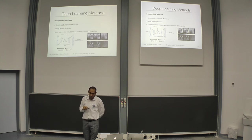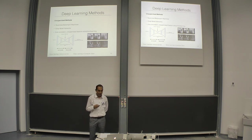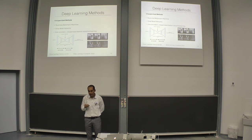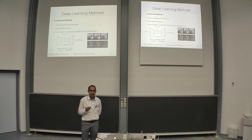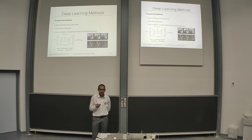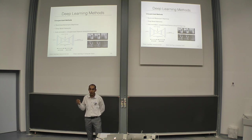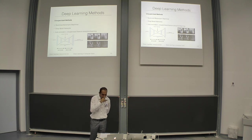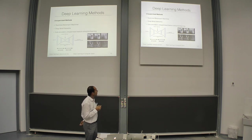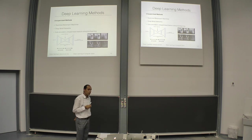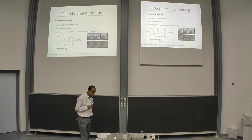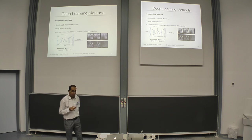Now I'll briefly mention deep learning methods. First, unsupervised methods — this means we have data but no teacher to tell us the label. We have observations but no ground truth. There are three main approaches: restricted Boltzmann machines, deep belief networks, and autoencoders. These are unsupervised feature extraction and learning methods.